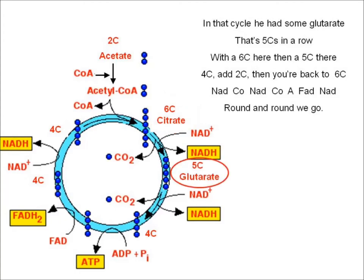In that cycle he had some glutarate, that's 5 C's in a row. With a 6C here, then a 5C there, 4C add 2C, then you're back to 6C. NAD, CO, NAD, CO, A, FAD, NAD, round and round we go.